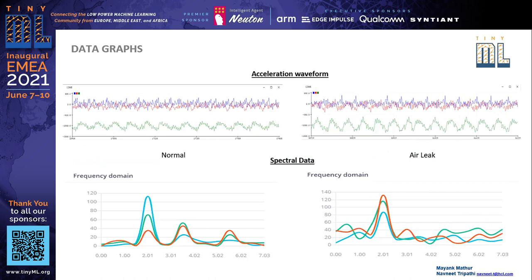This slide shows the data graphs — the acceleration waveform and the spectral data for normal and air leak conditions — and we can see how the data varies, being more turbulent in the case of a dry run.